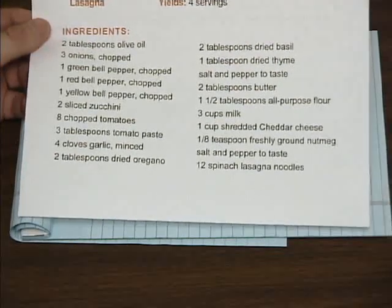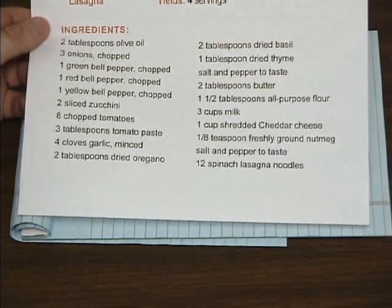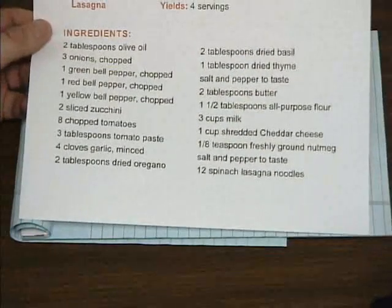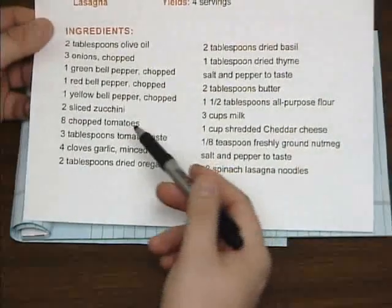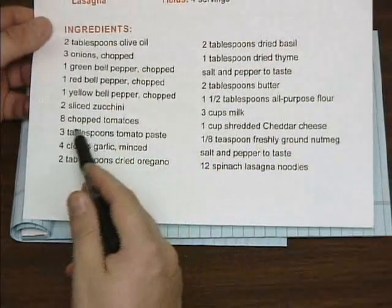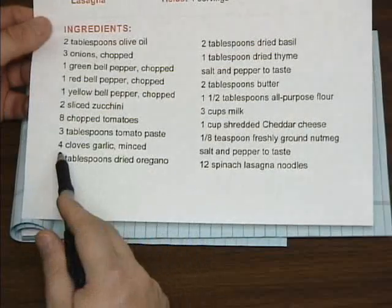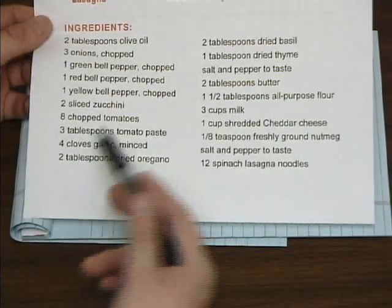However, if you only wanted to serve two, you'd probably know that you'd go through and cut everything in half. For example, instead of using eight chopped tomatoes, you'd only use four. Instead of using four cloves of garlic, you'd only use two.